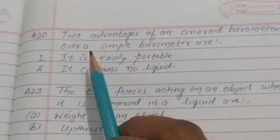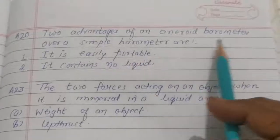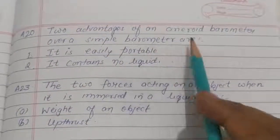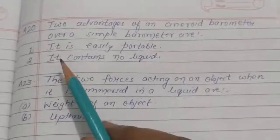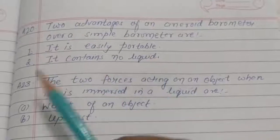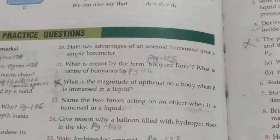Question number twenty: state two advantages of an aneroid barometer over a simple barometer. Answer: number one, it is easily portable; number two, it contains no liquid.